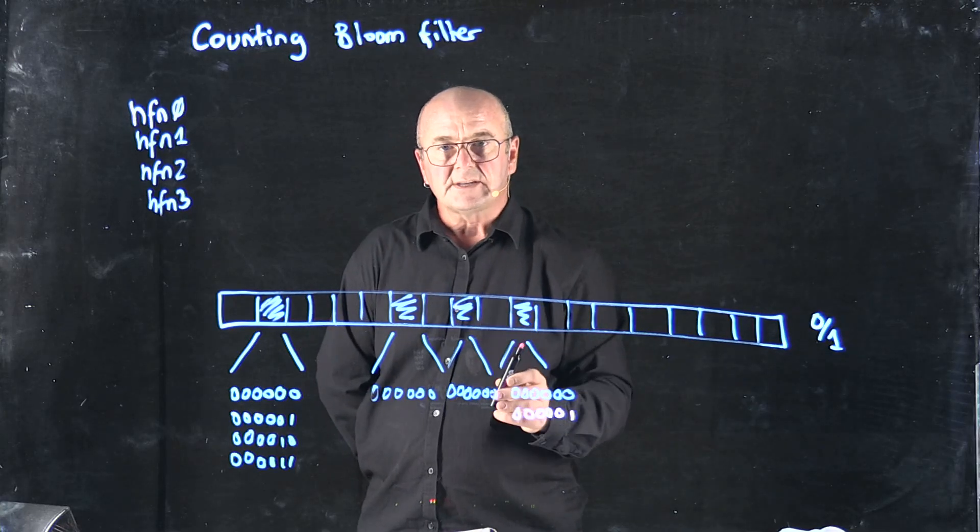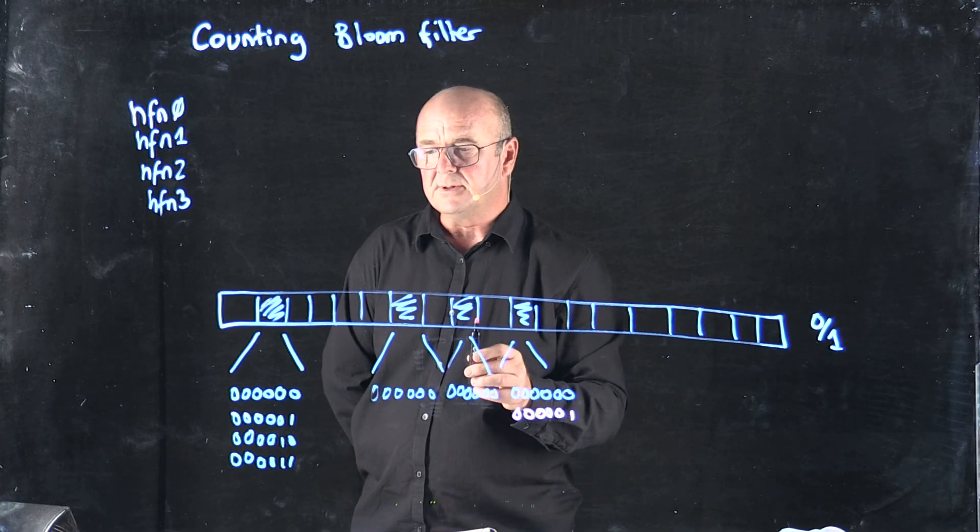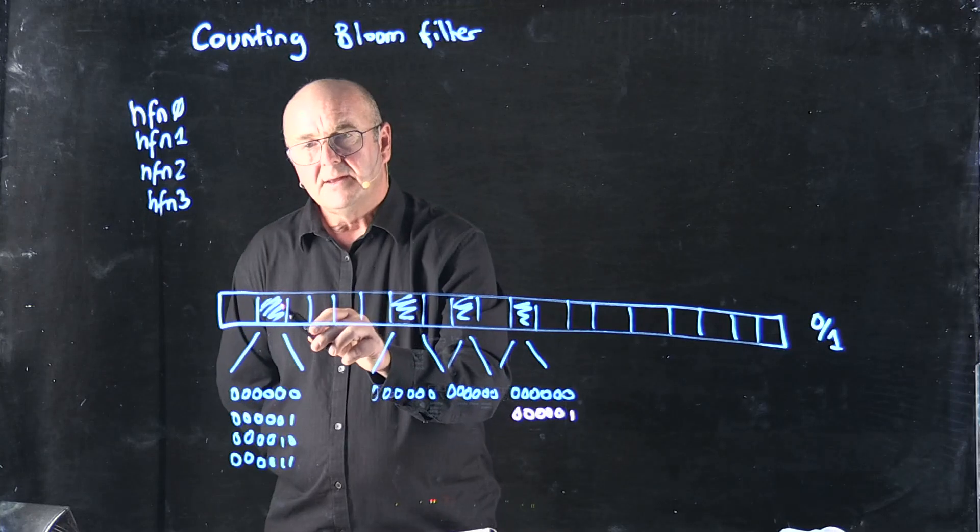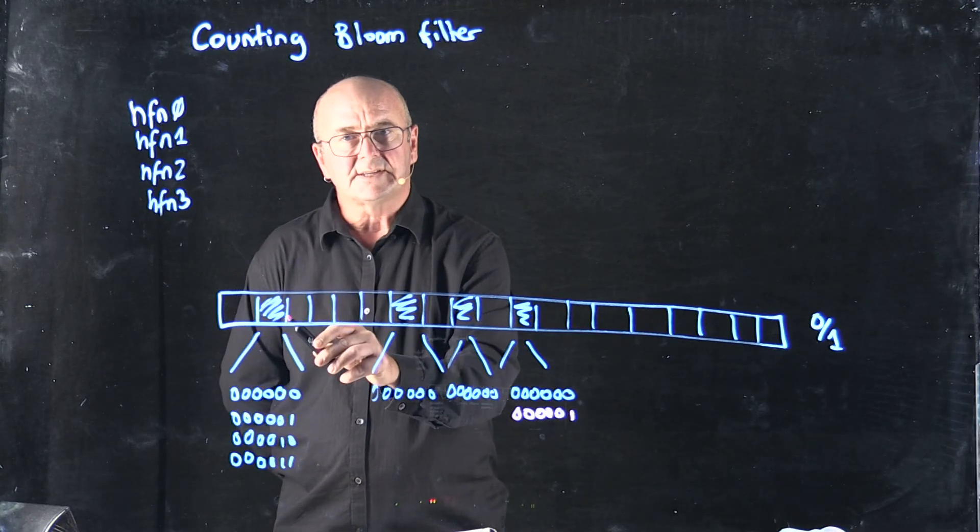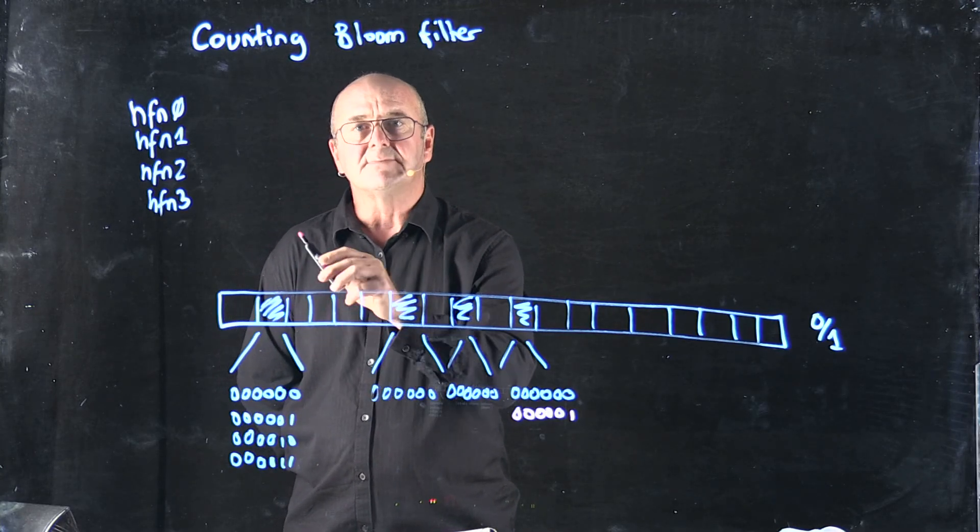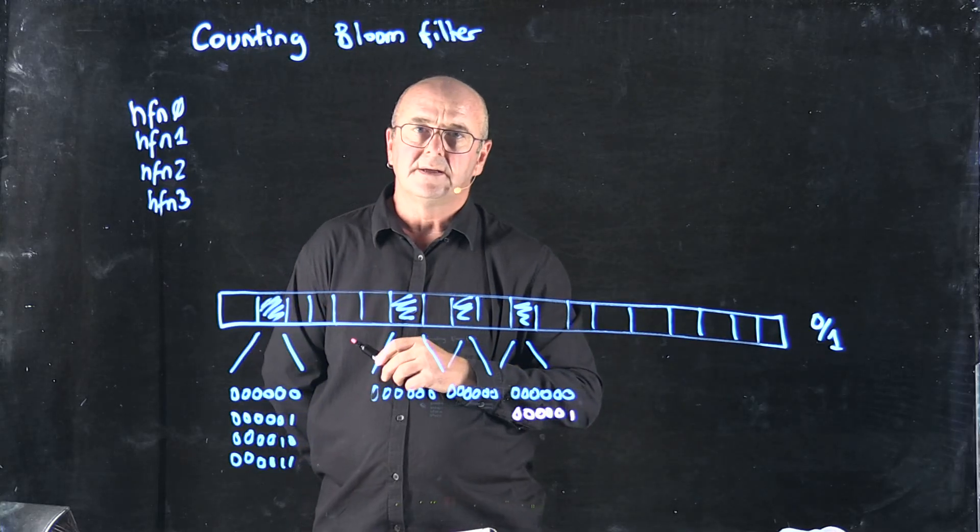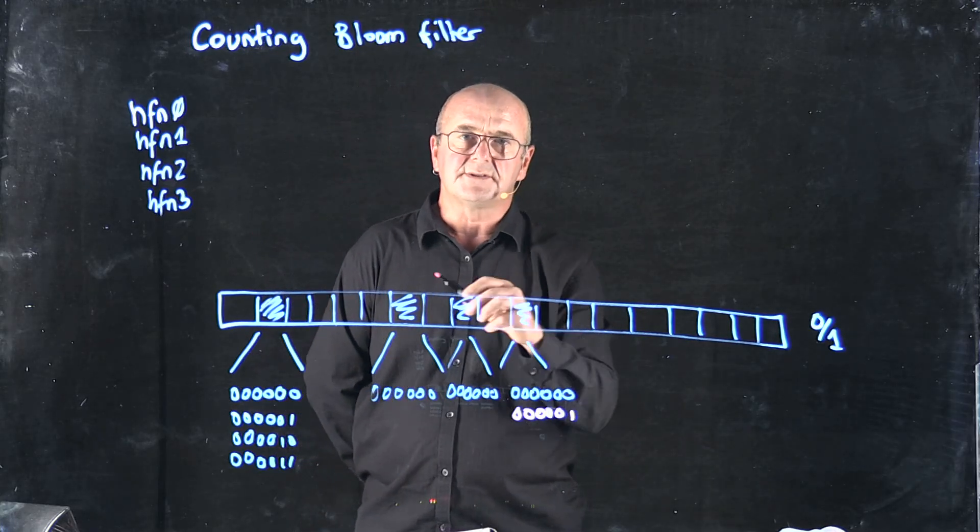Now in principle, the bin with the smallest value is most likely to be the count associated with my k-mer.